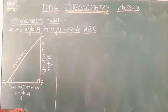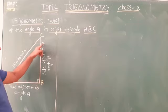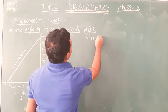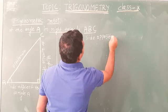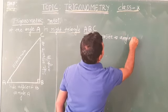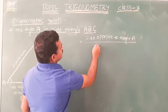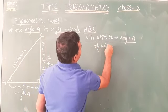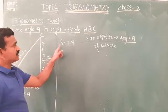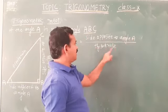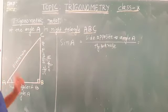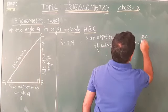The first one: if you take the side opposite to angle A divided by hypotenuse, that gives sin A. So sin A is equal to side opposite to angle A divided by hypotenuse, which in this given triangle is BC by AC.